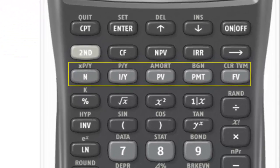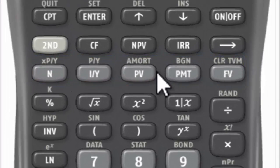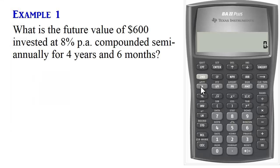To do this, we need to use the time value of money buttons stated here. First, let's clear time value of money by pressing 2nd, clear time value of money to clear whatever has been stored in these entries.